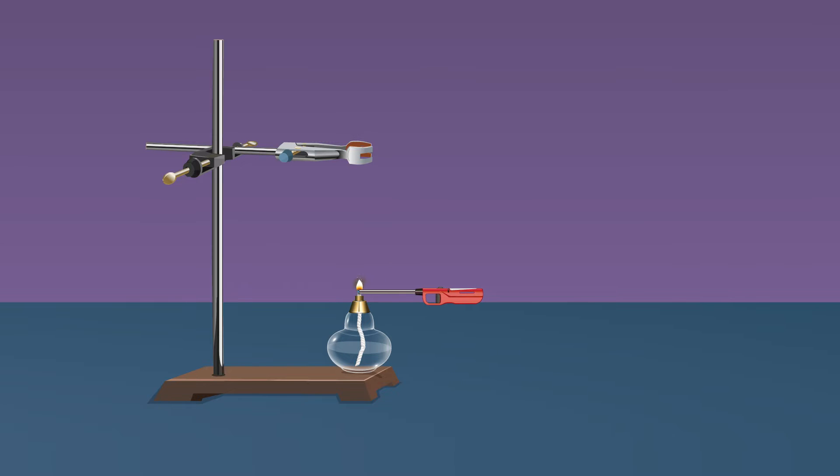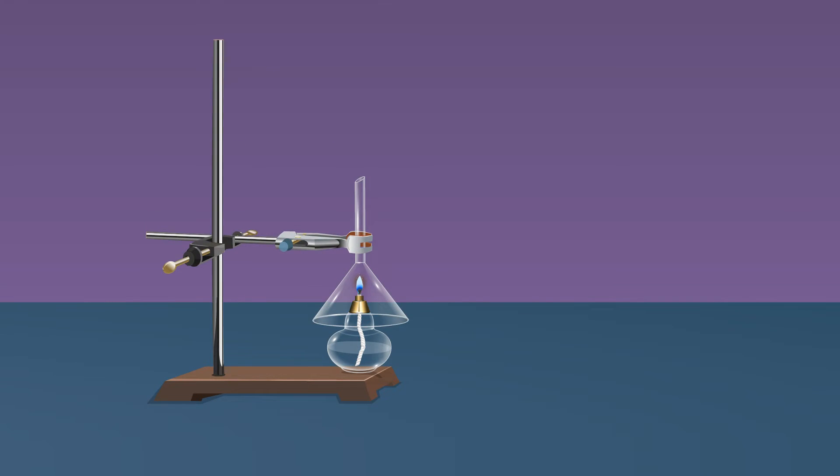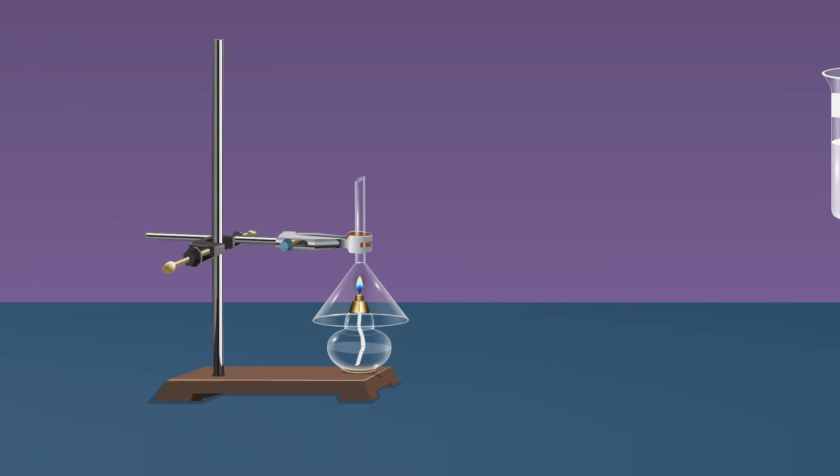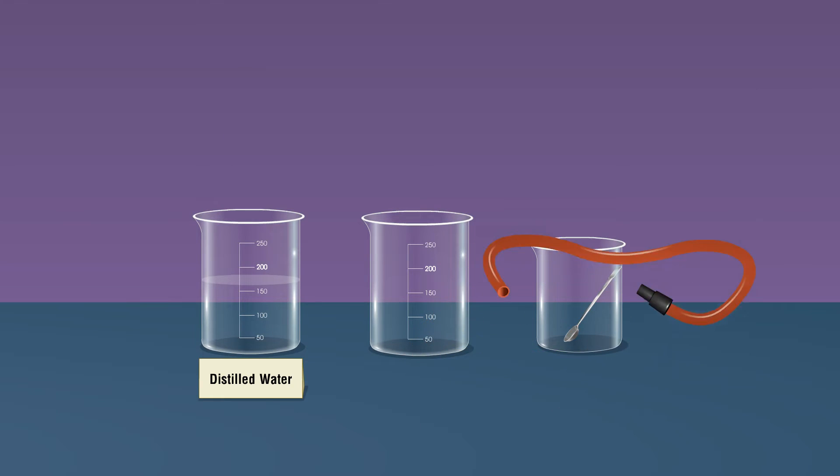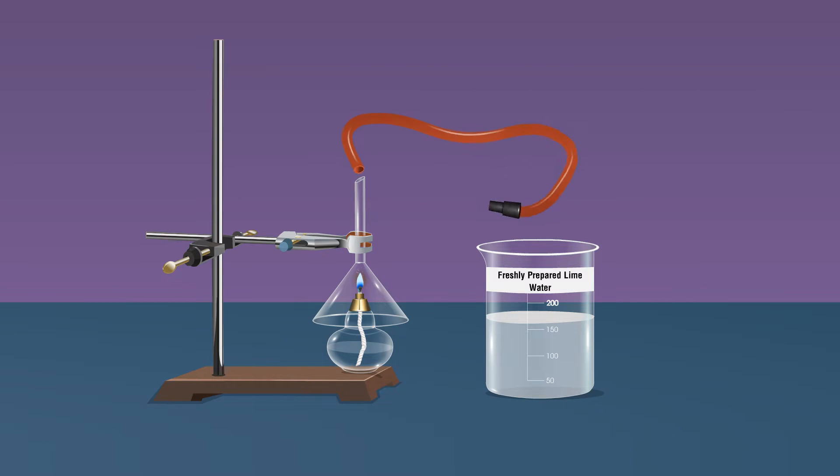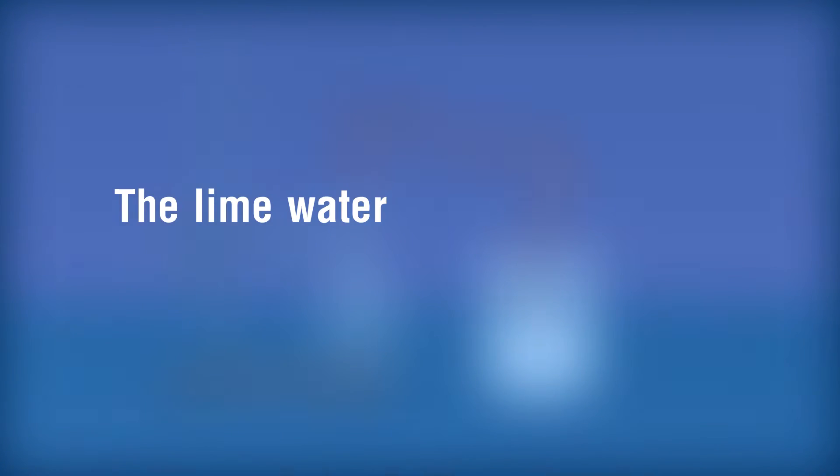Ignite it using a lighter and cover the lamp with an inverted funnel using a clamp as shown. Take freshly prepared lime water which is kept in a beaker. Take rubber tubing, fix the stem of the inverted funnel with a rubber tubing attached to a jet on another end. Pass the evolved vapors through freshly prepared lime water.